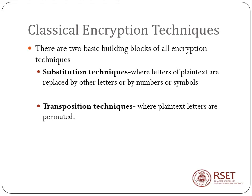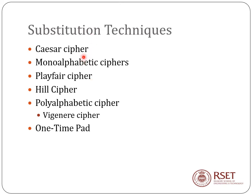Here we will discuss substitution techniques. These include: Caesar cipher, monoalphabetic cipher, Playfair cipher, Hill cipher, and polyalphabetic ciphers (including Vigenère cipher and one-time pad). In this part one, we will discuss only up to the Playfair cipher; the remaining ciphers along with transposition techniques are covered in part two of this session.